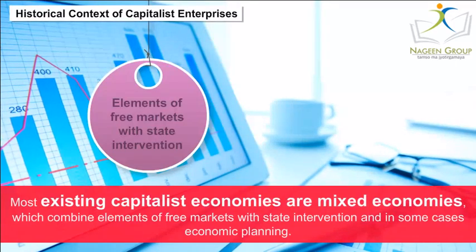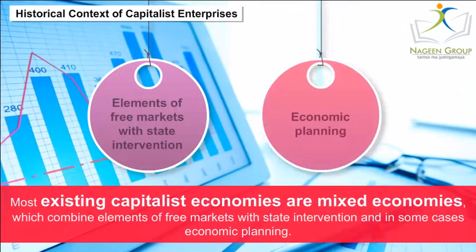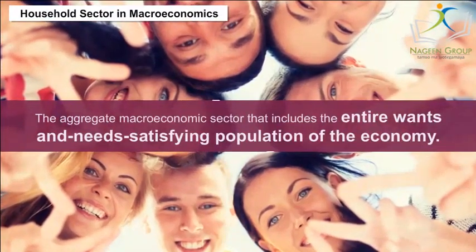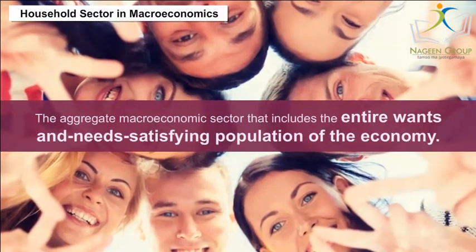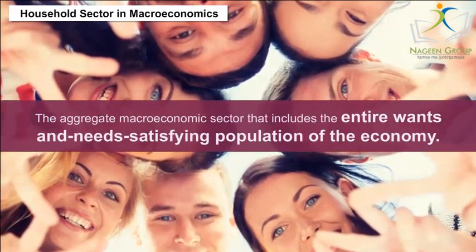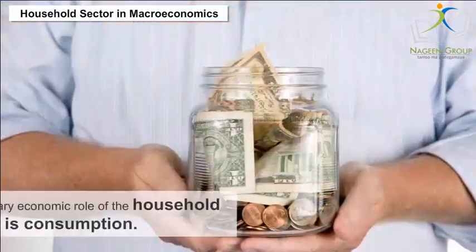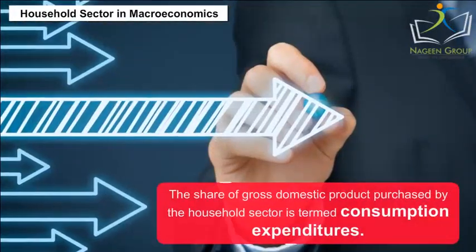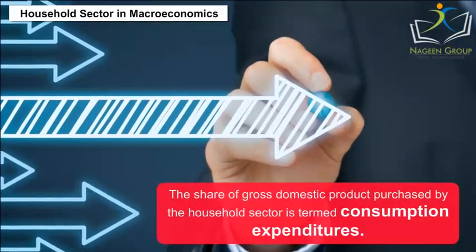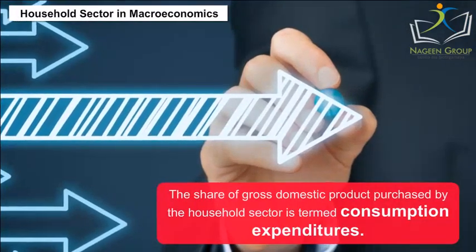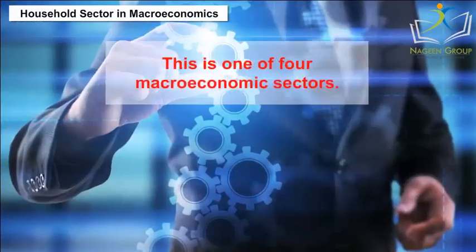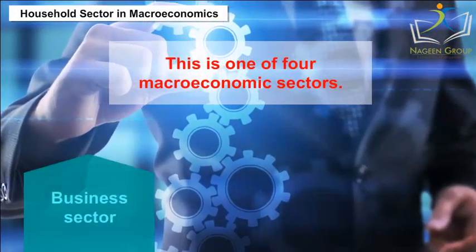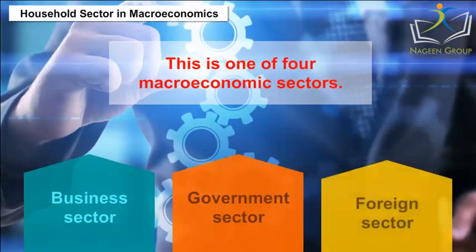Most existing capitalist economies are mixed economies, which combine elements of free markets with state intervention and in some cases economic planning. Household sectors in macroeconomics: the aggregate macroeconomic sector includes the entire wants and needs satisfying population of the economy. The primary economic role of the household sector is consumption. The share of gross domestic product purchased by the household sector is termed consumption expenditures. This is one of four macroeconomic sectors; the other three are the business sector, government sector and foreign sector.